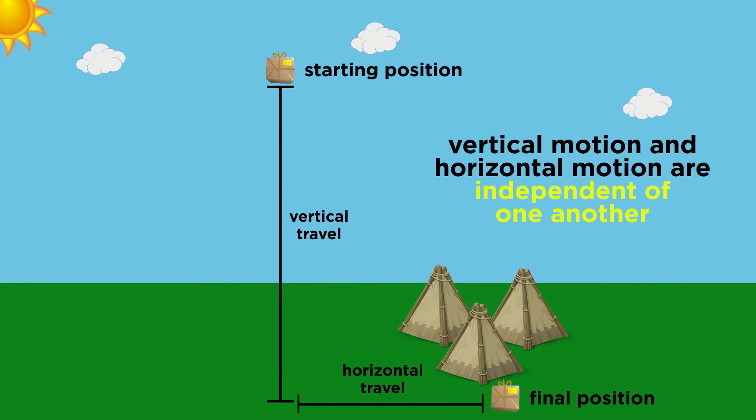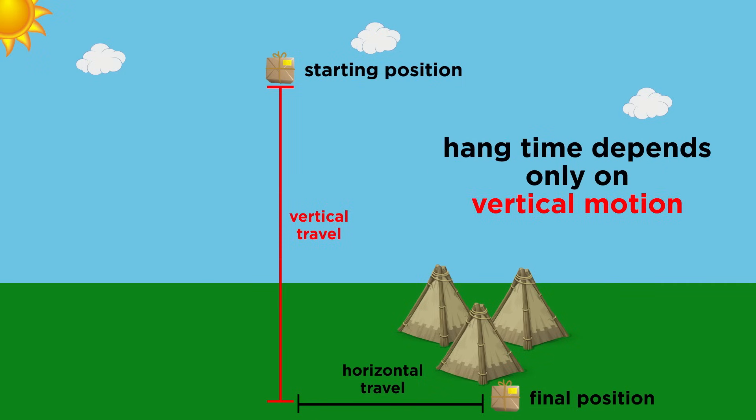So the first thing we need to recall is that the vertical and horizontal motion are independent of one another. The package will take the same amount of time to hit the ground, whether there is horizontal motion or not. So, we can isolate the y direction to find the time elapsed in the air.